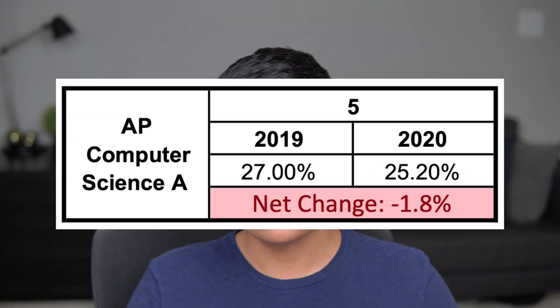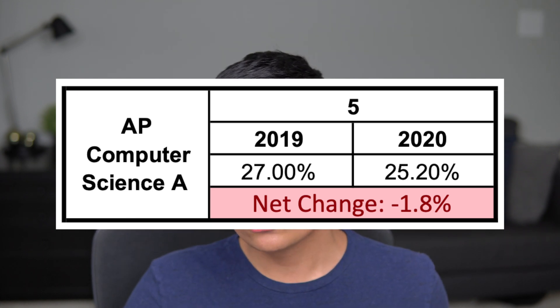The exam I teach on this channel is AP Computer Science A, and in terms of its five rate, the percentage of students who got a five dropped by only 1.8% from 2019 to 2020 — not a significant drop, but a small one. That's understandable because the exam was only based on the FRQ section and not multiple choice. There was also a new type of question — the infamous Part C — which was a short answer question rather than a code-related question, which may have caught some students off guard.